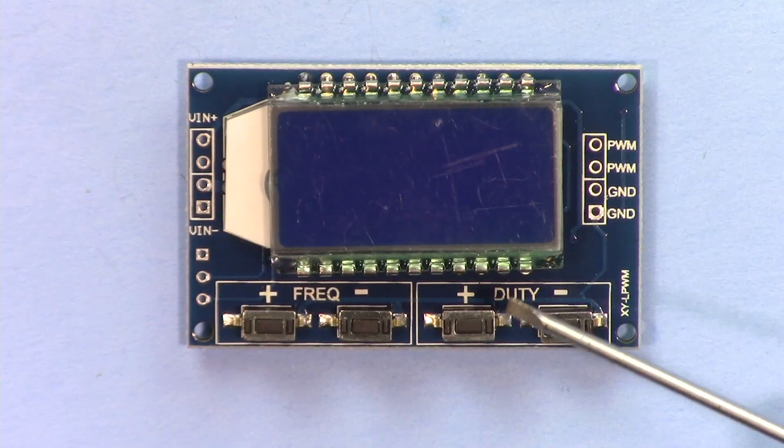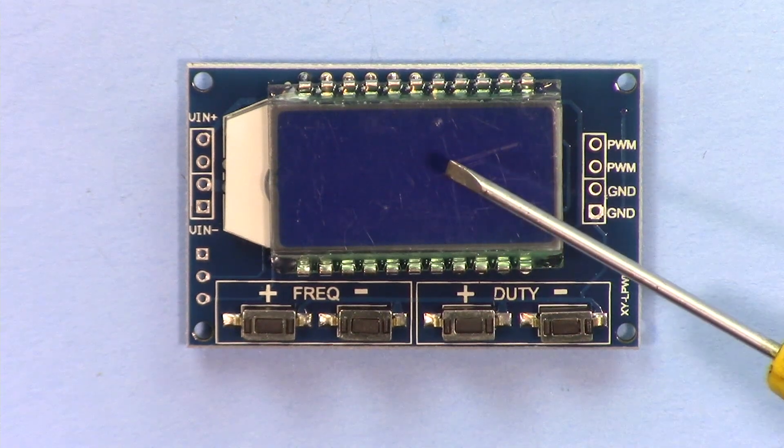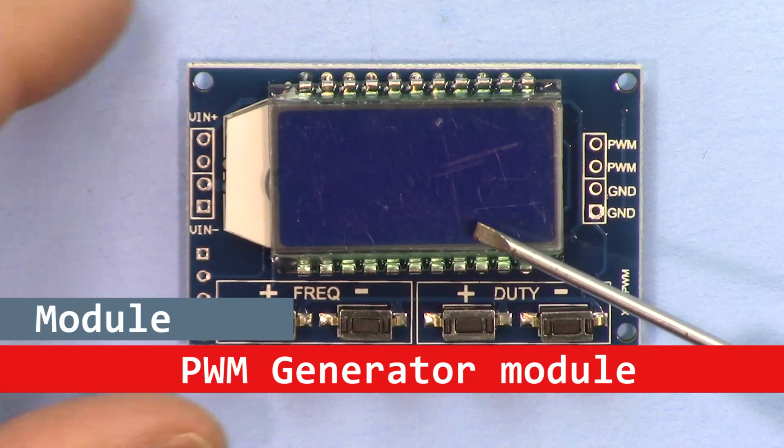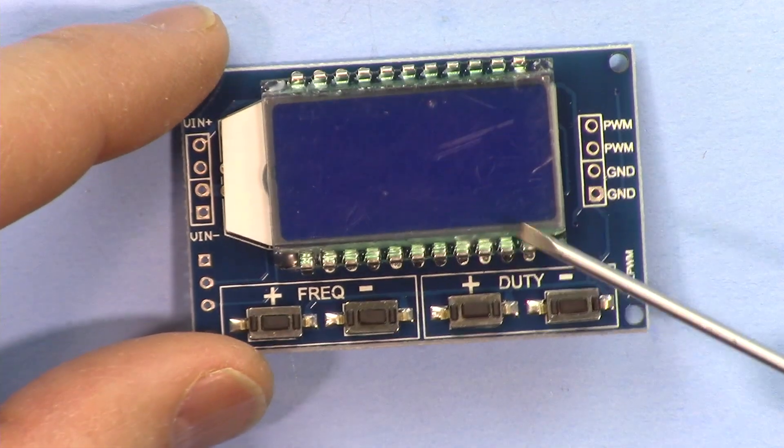Hi, welcome to another video from Robojax. In this video I'm going to introduce this pulse width modulation generator. This is a device that can be used to control servo and also for any other purpose if you need pulse width modulation. It can work with 5 volts and the model is XY-L PWM.